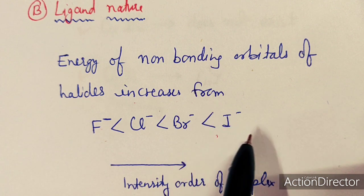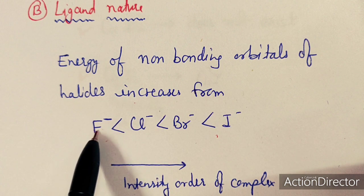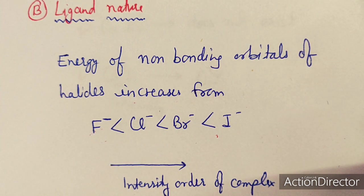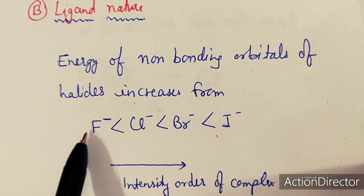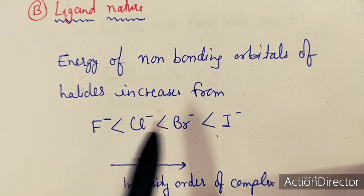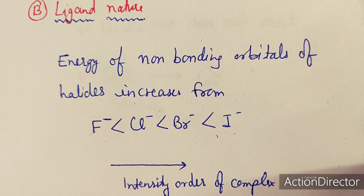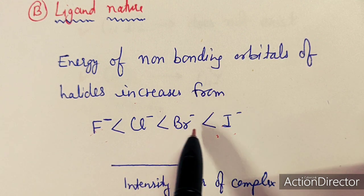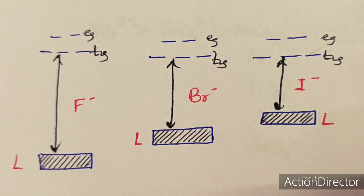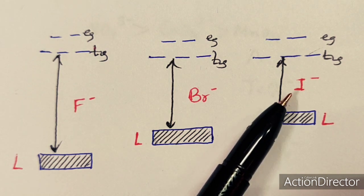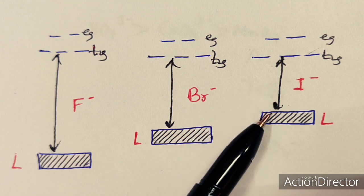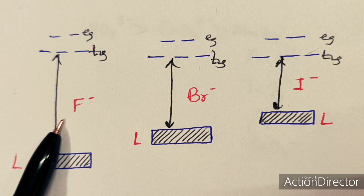The energy gap between ligand orbitals and metal orbitals decreases going from F⁻ to I⁻. As the electronegativity of the halide ion increases (F⁻ highest), its ligand orbitals have the lowest energy, analogous to how oxygen orbitals are lower in energy than carbon in CO due to higher electronegativity.